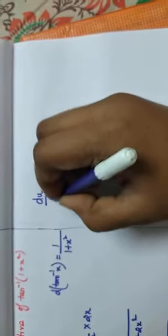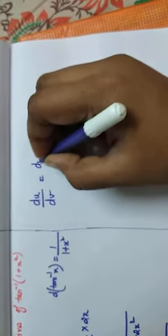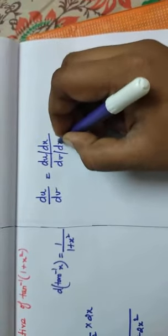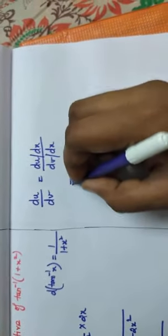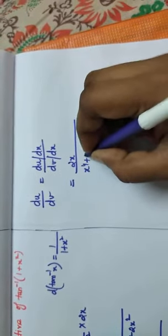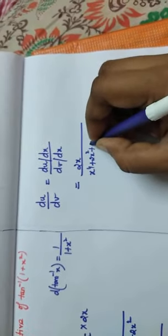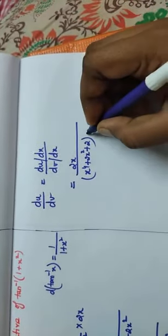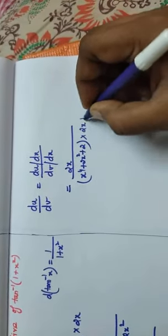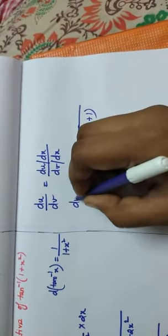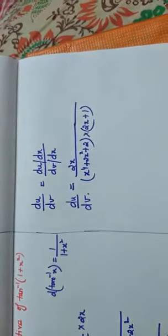What is my final answer? I have to find du/dv, which is du/dx divided by dv/dx. That equals 2x divided by (x⁴ + 2x² + 2), divided by (2x + 1). That is our du/dv. Thank you.